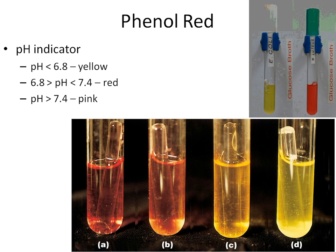Since we've added the phenol red pH indicator, we can visually follow whether the pH of the solution is going down. When we look at these media, they're going to start out red. If we add a bacteria that cannot use the sugar, it will stay red. If we add a bacteria that can use the sugar, it's going to convert the sugar into lactic acid, and the pH of the media will start to decrease — you'll start seeing the color change from red to orange to light orange to yellow.